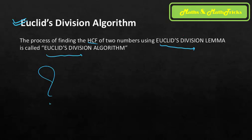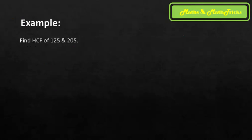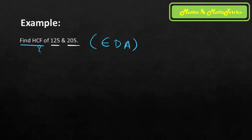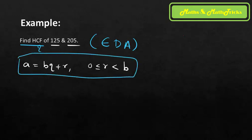Let's understand this with an example: find the HCF of 125 and 205 using Euclid's Division Algorithm. We are applying the lemma repeatedly — a = bq + r, where r is minimum zero and below the divisor. First, choose a as the larger number: a = 205, b = 125.